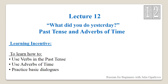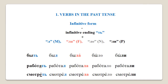Hi and welcome to your twelfth lecture in Russian for Complete Beginners, in which we will focus on learning how to use verbs in past tense and how to use adverbs of time. So far we have studied verbs in the present tense. We know that there are two groups or conjugations in Russian — first and second — and we also know that we don't use the verb 'to be' in the present tense.